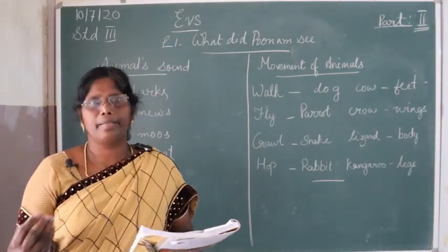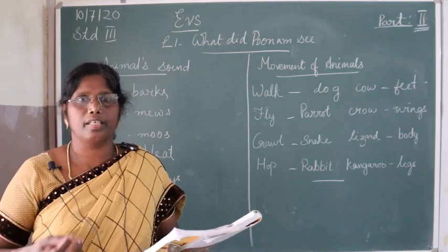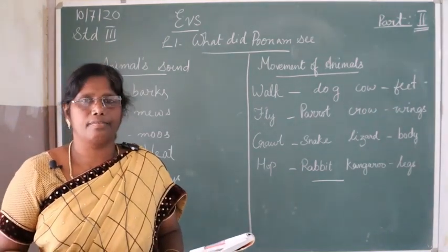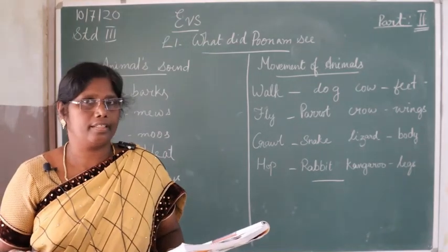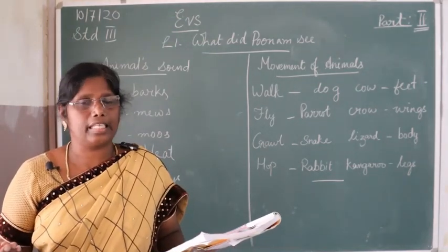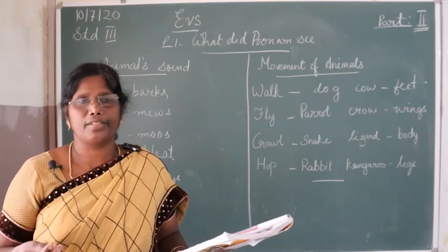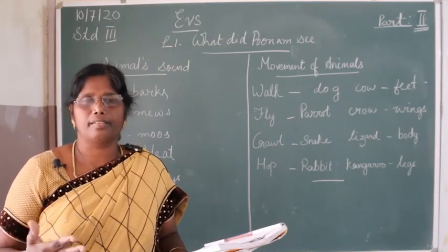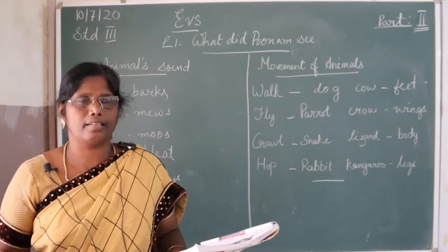Now, habitat. Habitat means the place where animals live. For example, lion — lion lives in the forest. And a fish lives in the water. So the habitat of lion is forest. Habitat means the place where animals live.